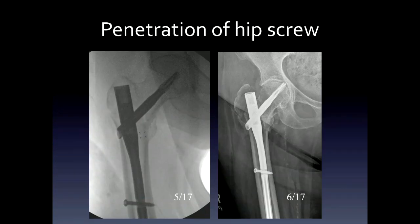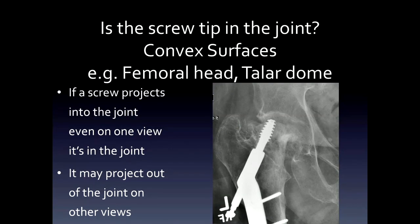In this case of an intertrochanteric fracture with a cephalomedullary nail, you can see the nail has penetrated into the joint on follow-up. We have to spend a couple of minutes talking about how you know that the tip of a screw is in a joint, because that can be difficult radiographically. For convex surfaces like the femoral head and the talar dome, if a screw projects into the joint even on one projection, it's definitely abnormal — even though multiple other views or fluoroscopy may make it look like it's not in the joint.